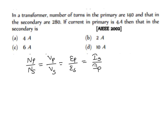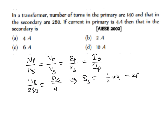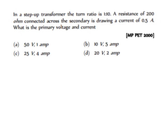Applying the formula: NP/NS = IS/IP gives us 140/280 = IS/4. This implies IS = (1/2) × 4 = 2 ampere. So option B is the right answer for this question.